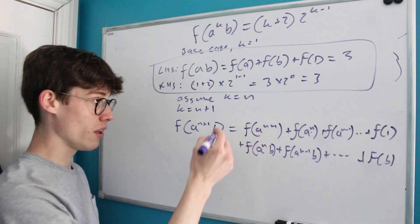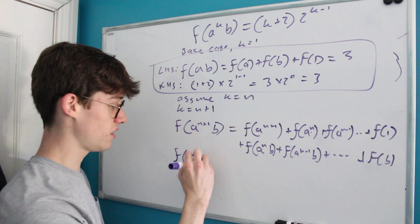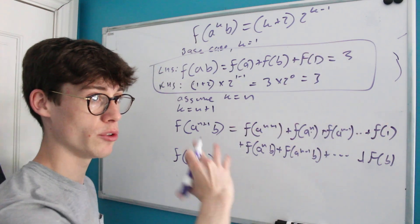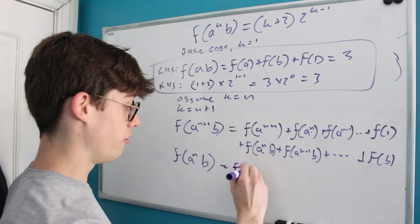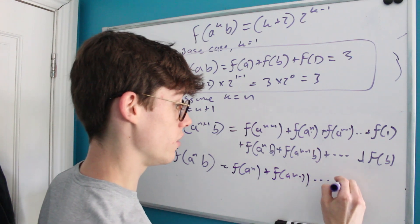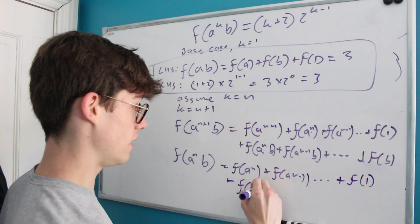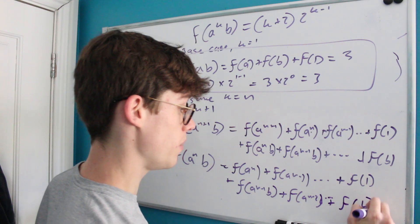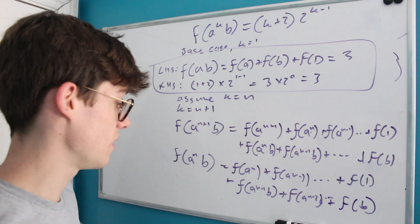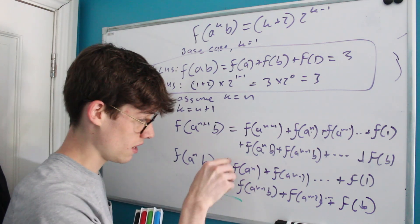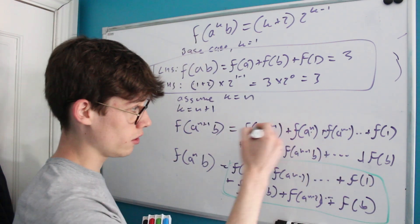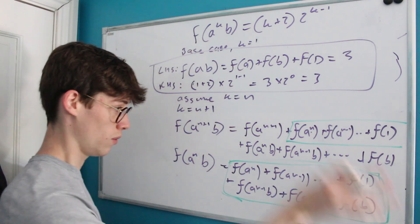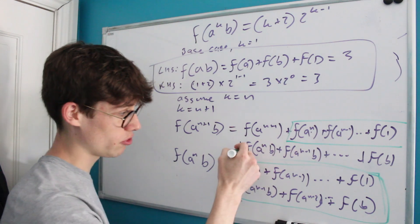To simplify, notice that f(a^n · b) itself equals [f(a^n) + f(a^(n−1)) + ... + f(a) + f(1)] + [f(a^(n−1)·b) + f(a^(n−2)·b) + ... + f(b)]. So the sum in f(a^(n+1)·b), after pulling out f(a^(n+1)), looks very similar to f(a^n·b) plus an extra copy of f(a^n·b).